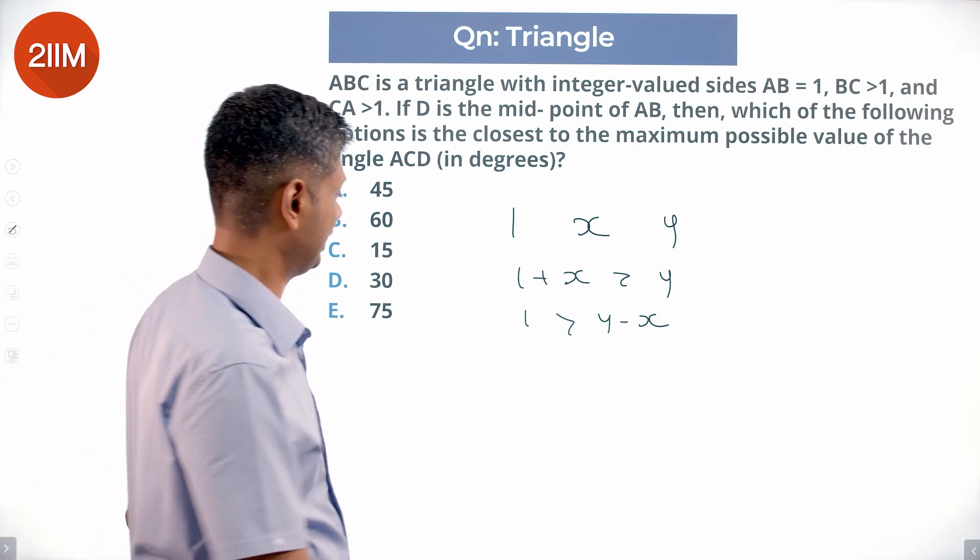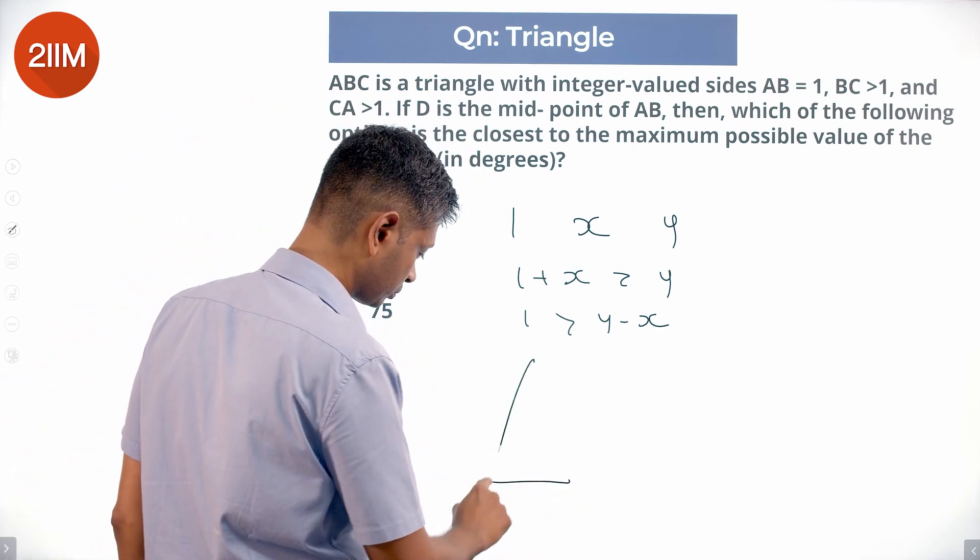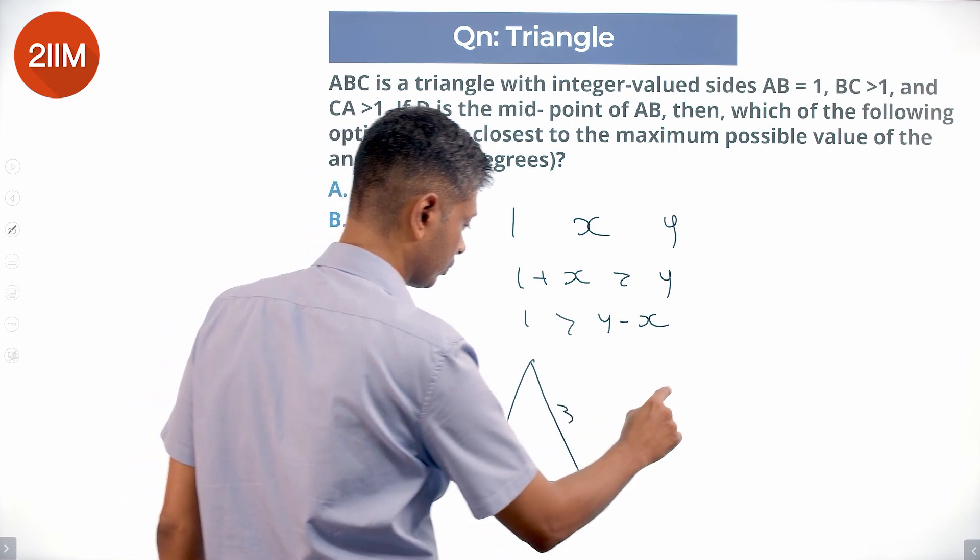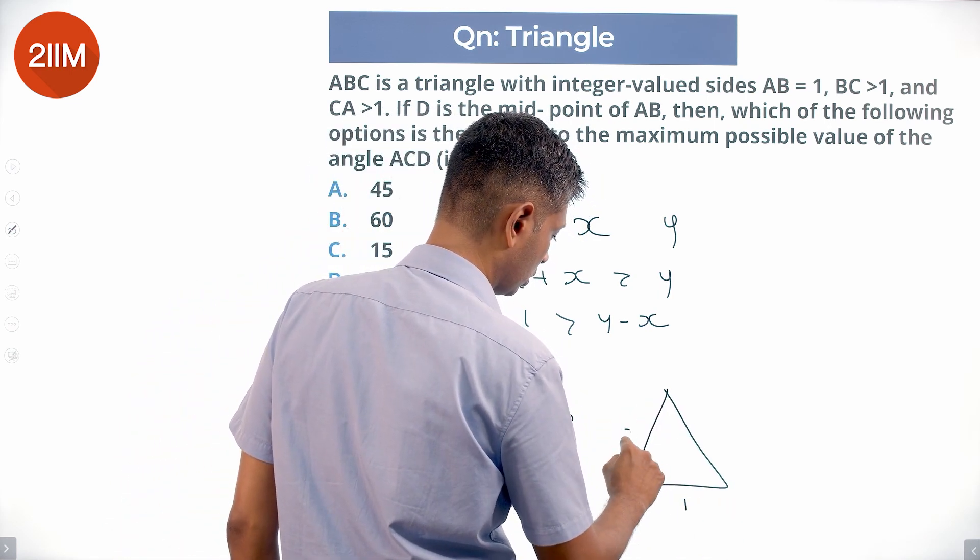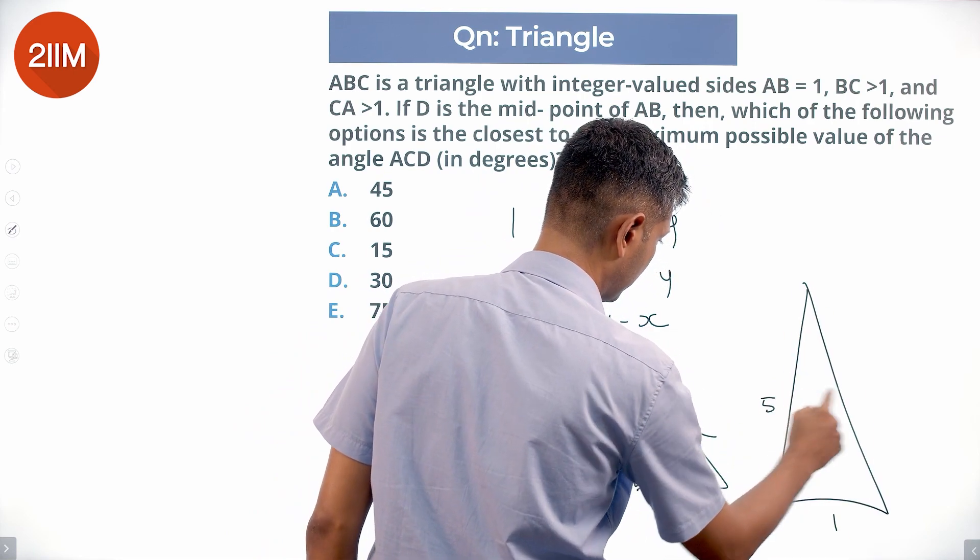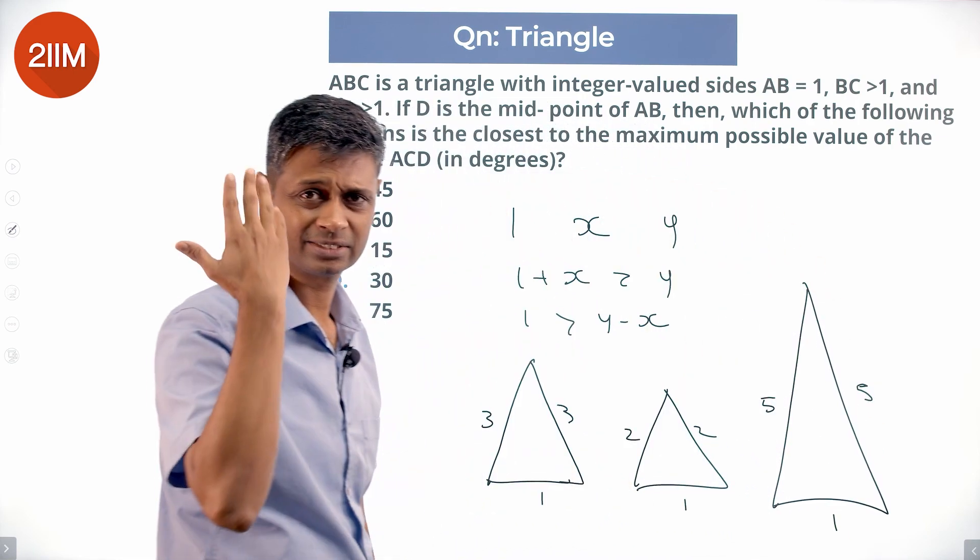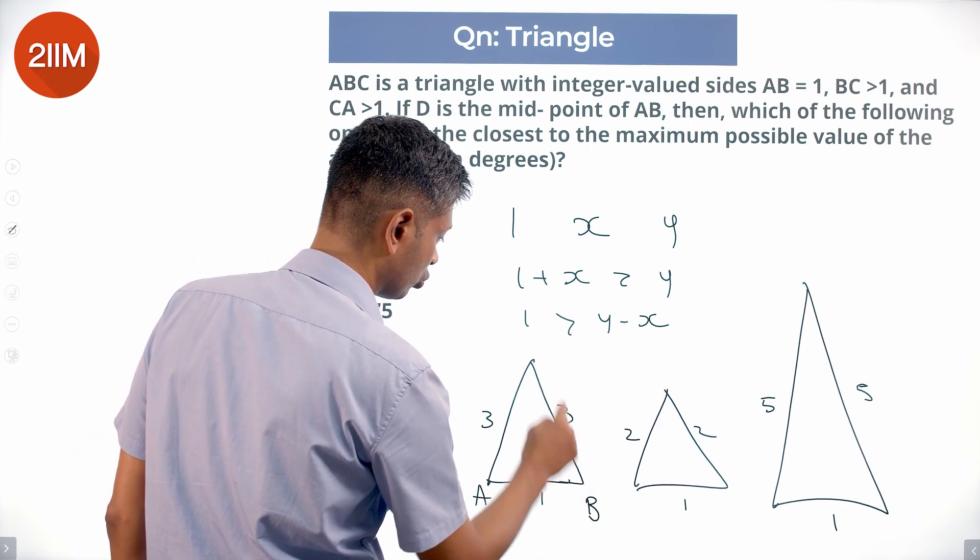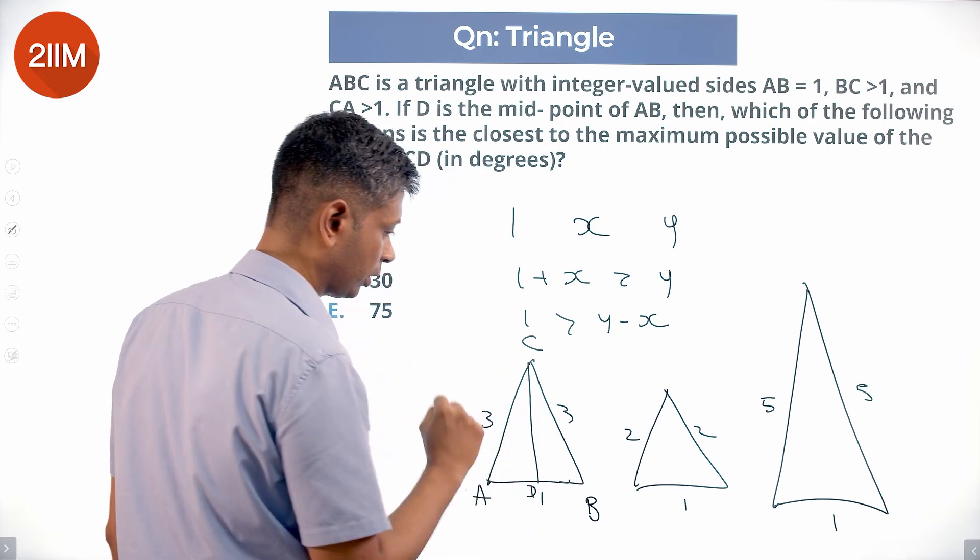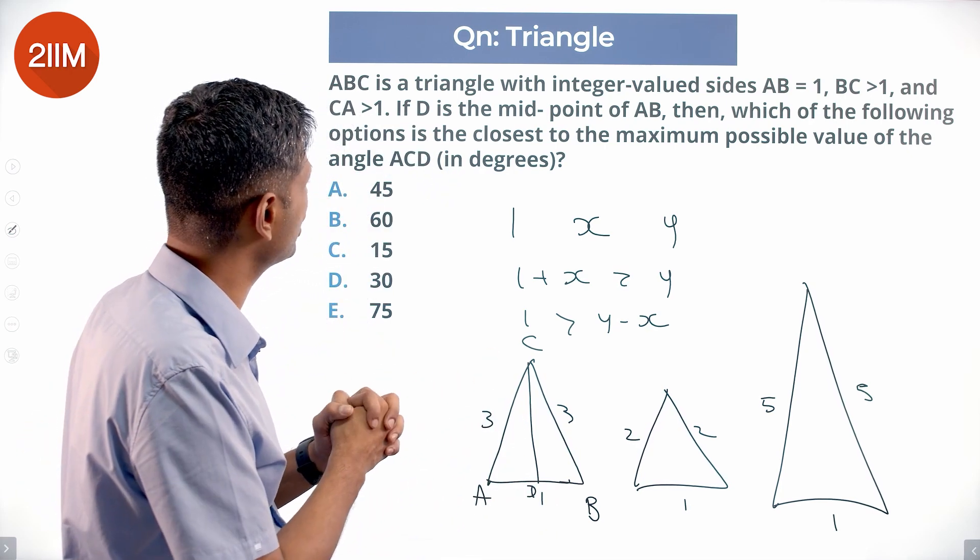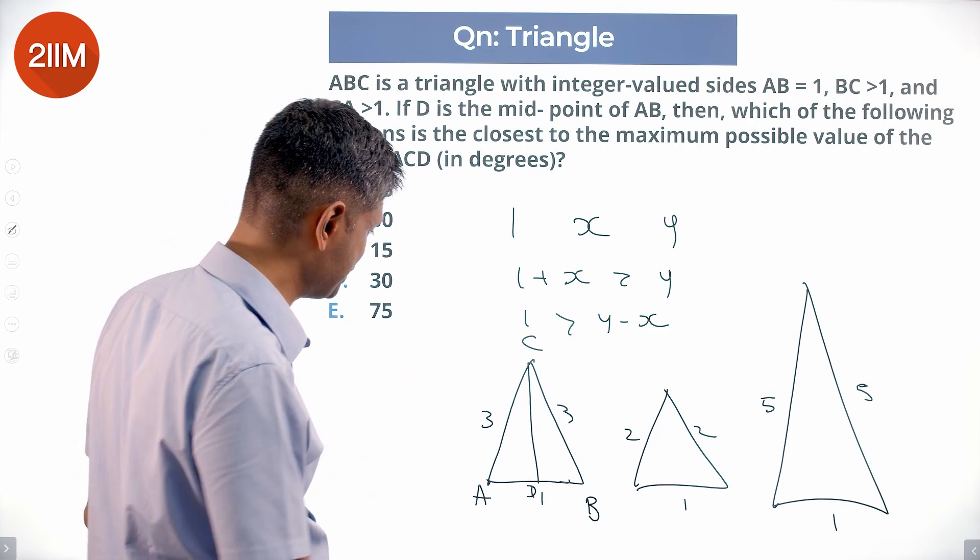And so we are looking at triangles where AB is 1. It could be 1,3,3; 1,2,2; 1,5,5, something like this. AB is the base, C is here, D is here. We want to find the maximum possible value of angle ACD.